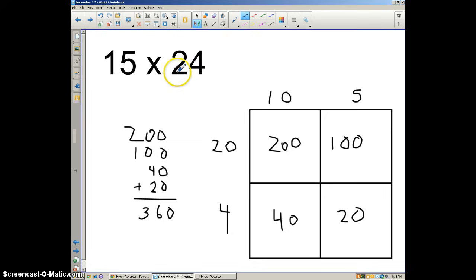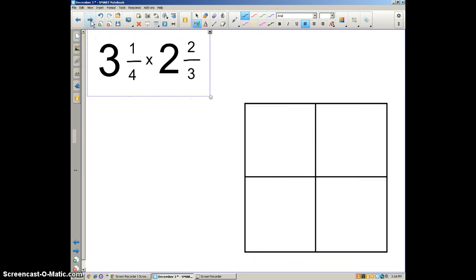So 15 times 24 is 360 because we broke this up, the 15 into the 10 and the 5. We broke up the 24 into 20 and 4. We multiplied the parts and then put those parts together to get a total of 360. That's something you're very familiar with. We're going to use that strategy to find the product of multiplying two mixed numbers. So it's not really any different.